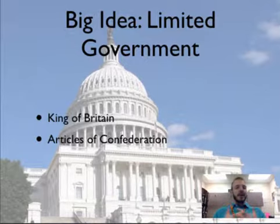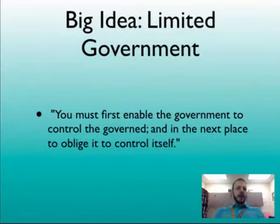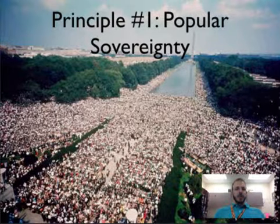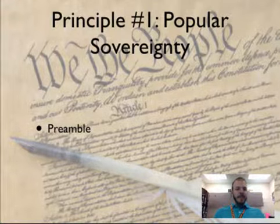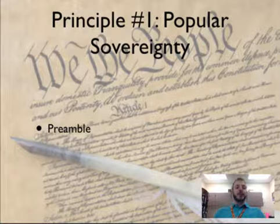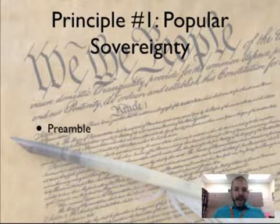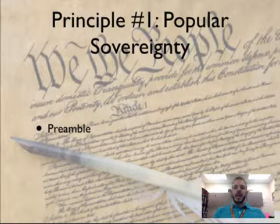You need to limit the power of government, but give it enough to get its job done, as so eloquently put by James Madison in Federalist No. 51. The first principle is popular sovereignty — the idea that the people are the source of the power. We see this in the preamble: 'We the people.' It's the first three words of the Constitution. We the people create this government; in other words, we're giving government its power.